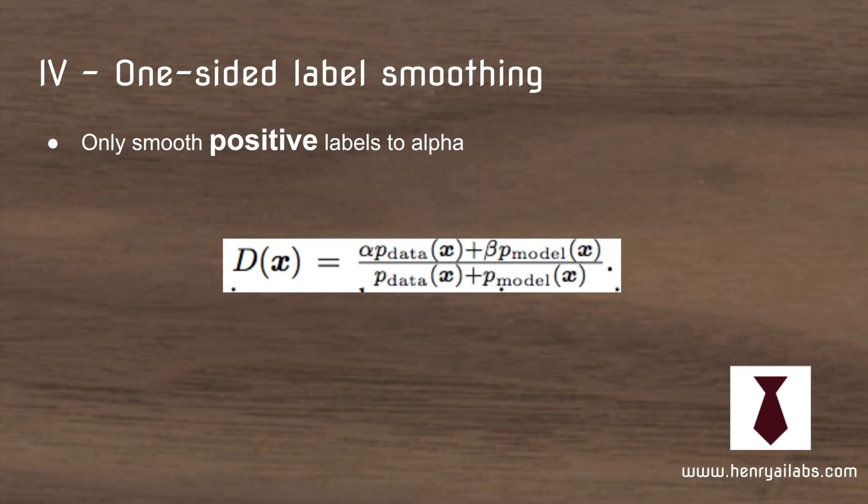The next idea is one-sided label smoothing. Label smoothing is an interesting idea—instead of having one and zero, you might have 0.8 and 0.2. They have a more rigorous formal proof for why you only smooth the positive labels. But from a high level, if the beta is in zero, then there's no real reason for it to push closer to the data in some cases.